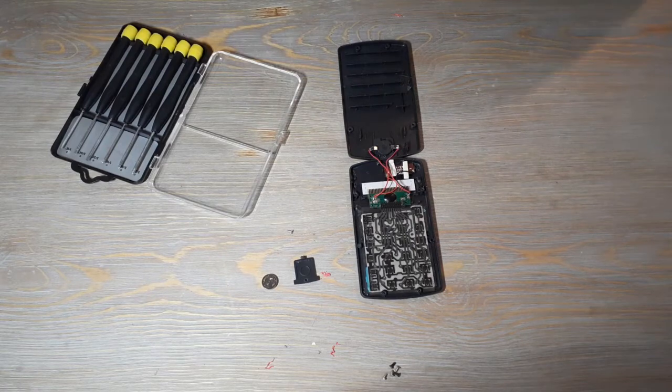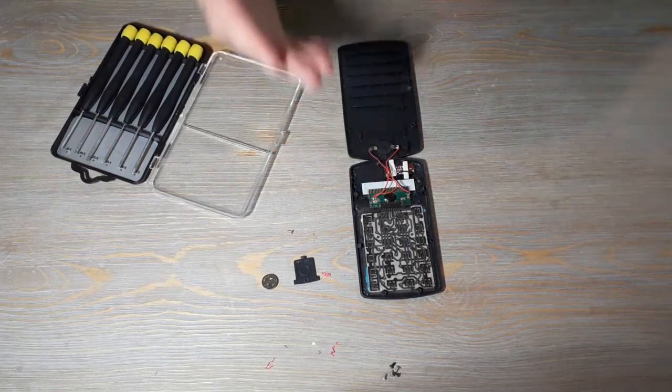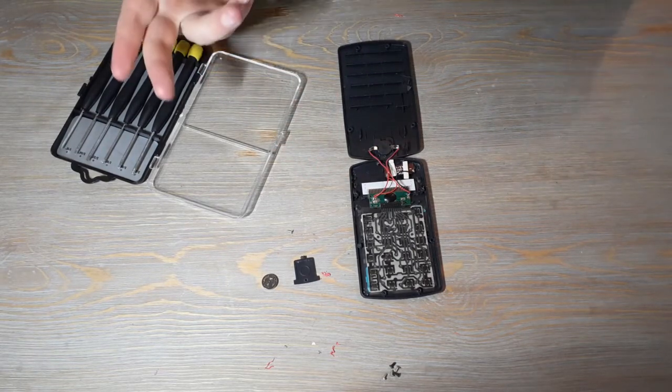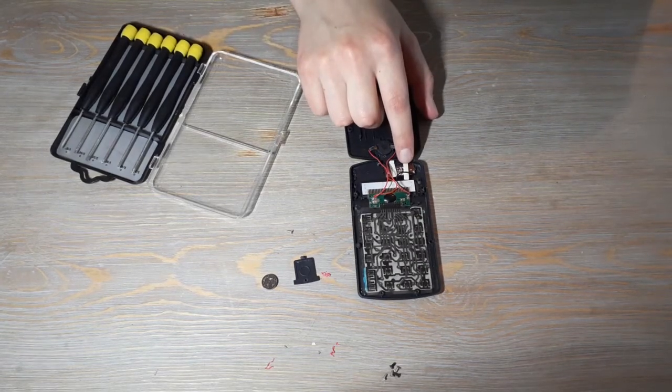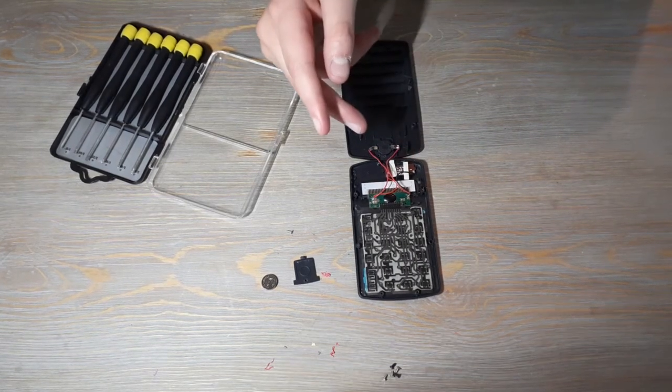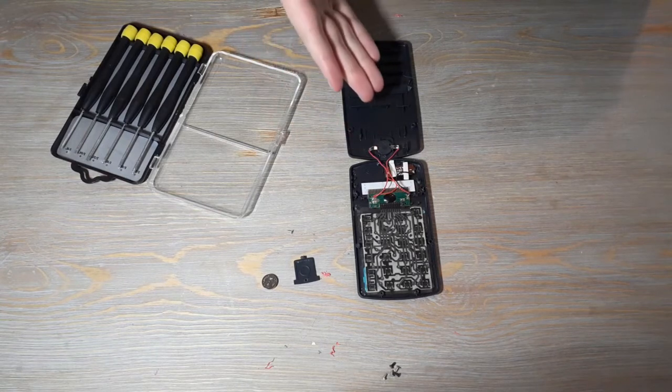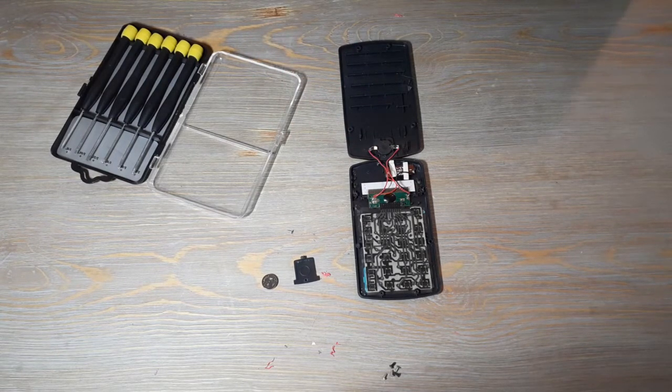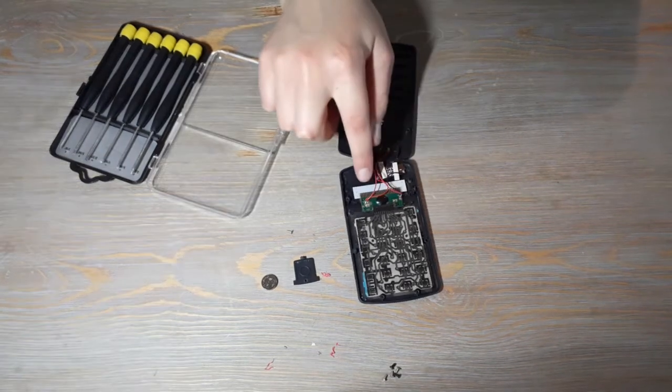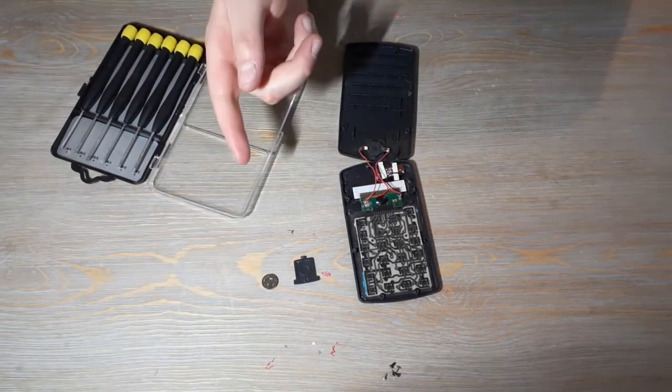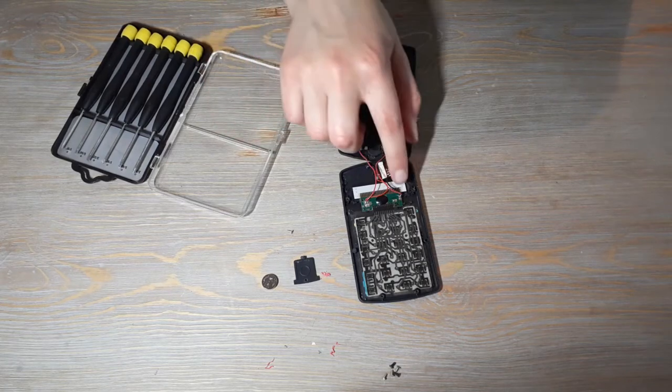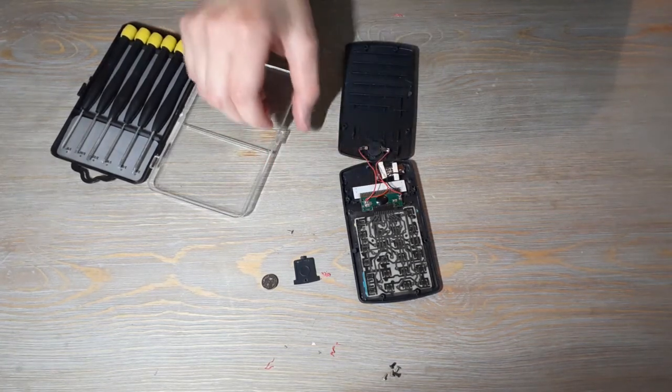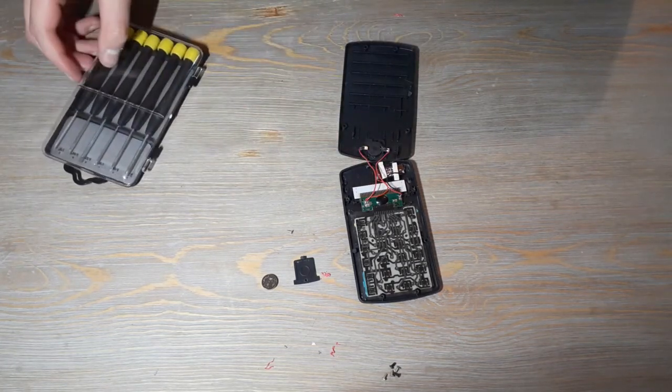So now we have the inside guts of the calculator. Here we have the solar panel which helps keep the battery longer and so has a longer life. Our screen right here that shows you the numbers and projects all the stuff. And our circuit board which tells you all the information.